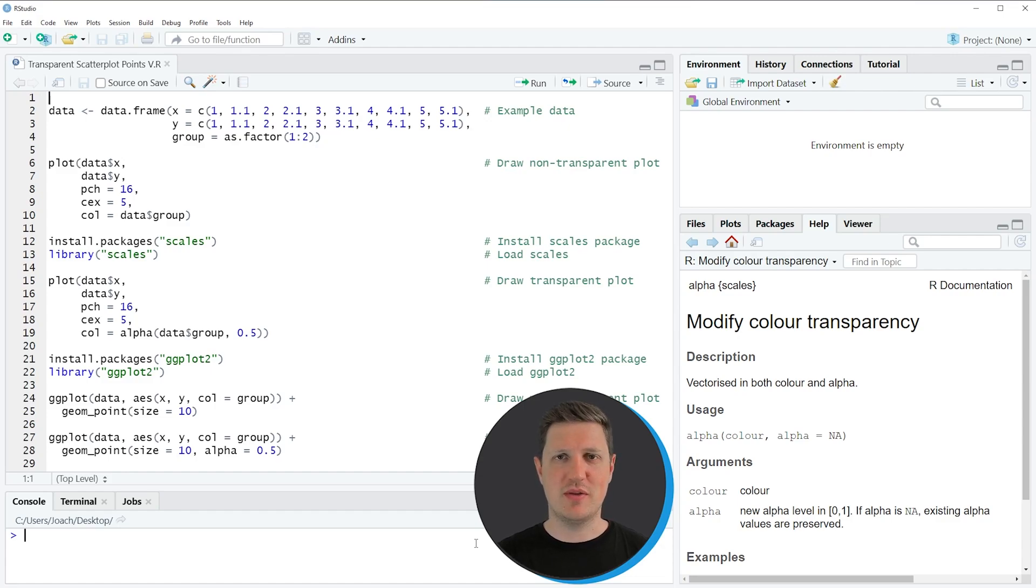Hi, I'm Joachim for StatisticsGlobe, and in this video I'll explain how to make the points in a scatterplot transparent using the R programming language.